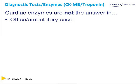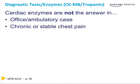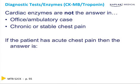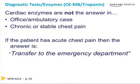Enzymes are not the answer in office or ambulatory cases. If a patient comes to the office saying they've been having chest pain off and on for the last couple of weeks, you do not get CK-MB levels to see whether they had a myocardial infarction today. That's the person who gets a stress test or an echo as an outpatient. You're not doing enzymes in chronic and stable chest pain. Those with acute chest pain should go to the emergency department, and office-based cases do not get enzymes.